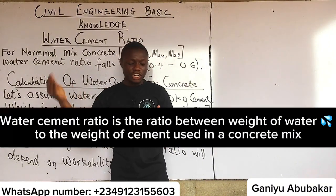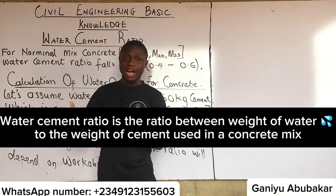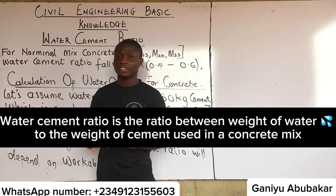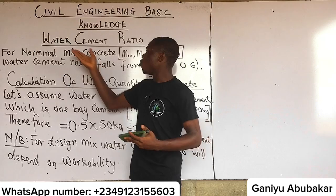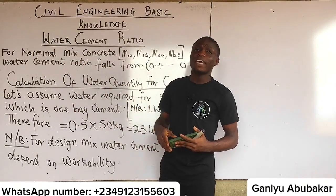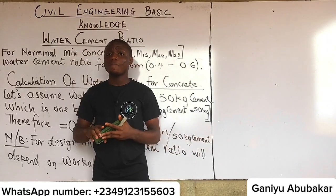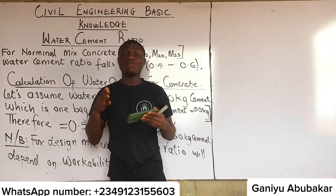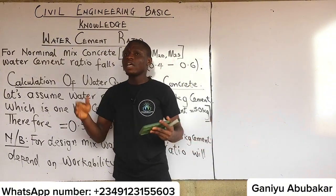By definition, water cement ratio means the ratio between the weight of water to the weight of cement used in a concrete mix. For this topic, there are two key terms: number one is water, and number two is cement.